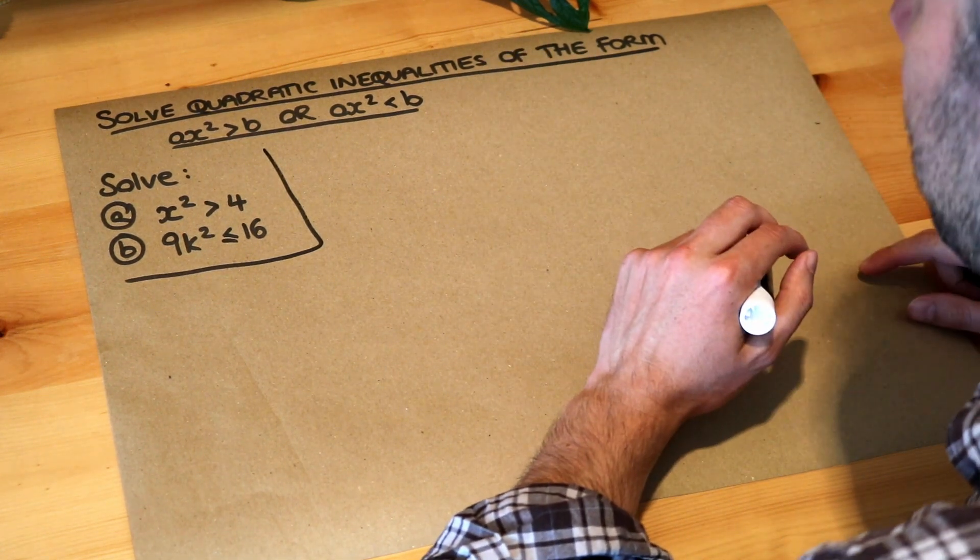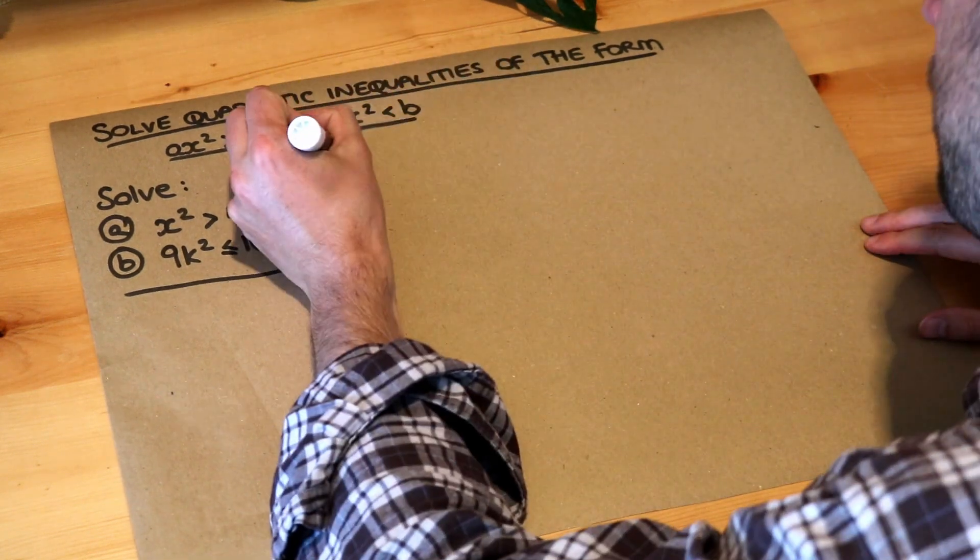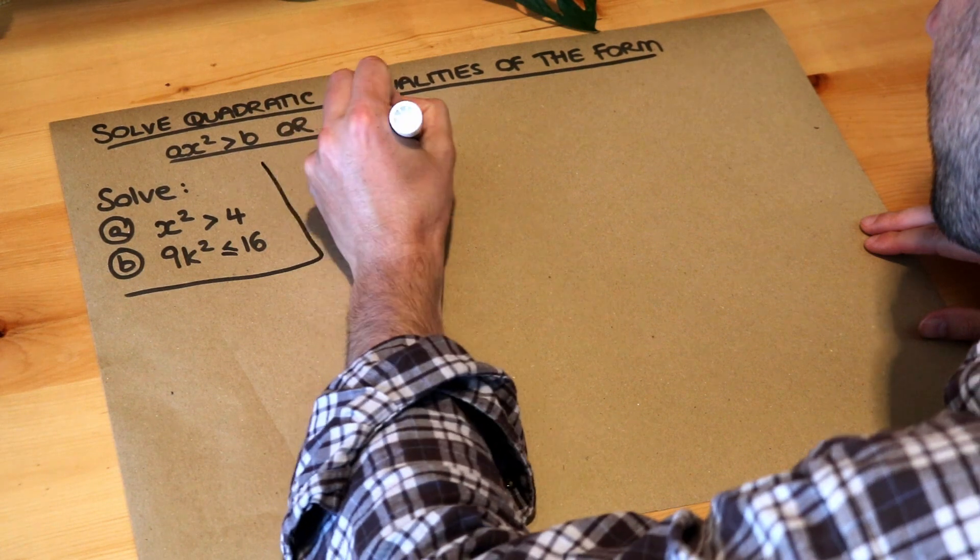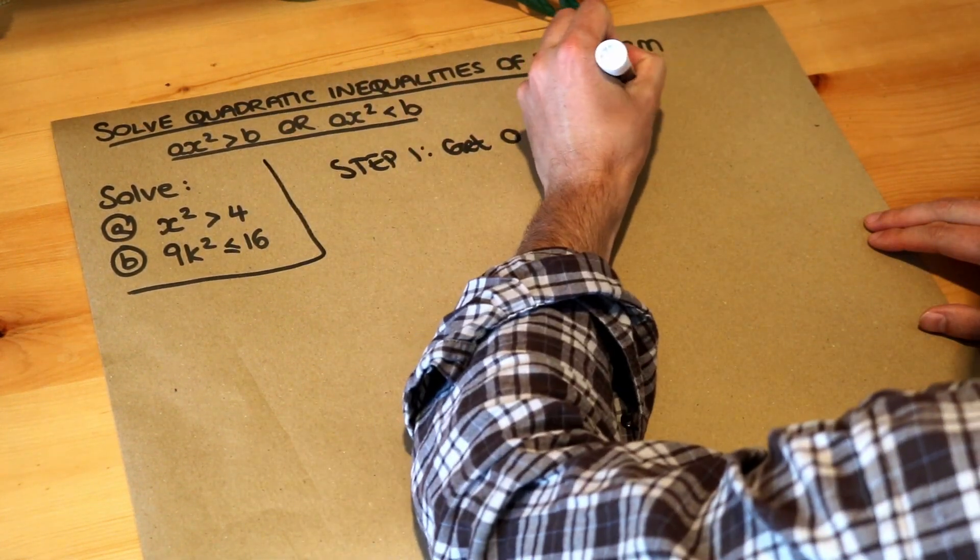Now the approach we've adopted in previous videos is that we should always get zero on one side. So step one is to get zero on one side, and it can be no different here.